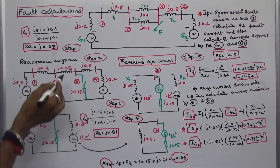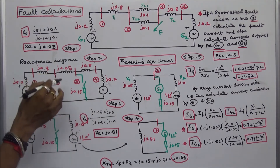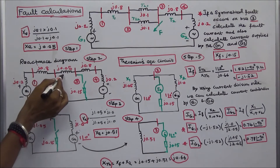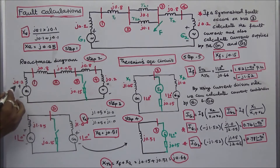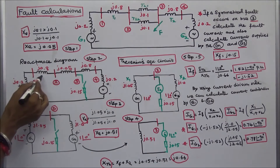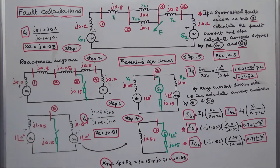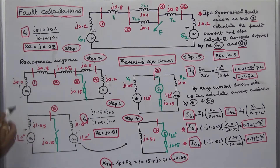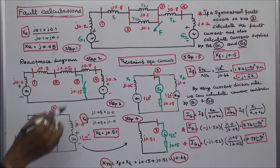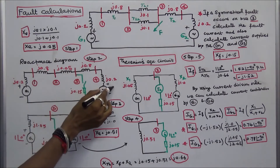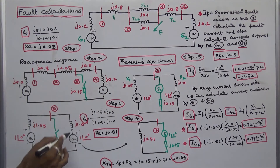Step 3: we have to simplify this reactance diagram. Here these three are connected in series: J0.2 plus J0.8 plus J0.05, which equals J1.05. Here the other two are connected in series: J0.8 plus J0.2, which equals J1.0.